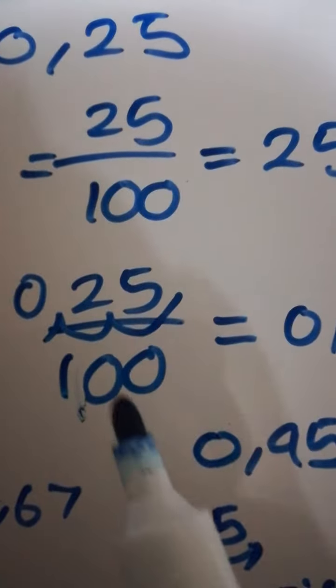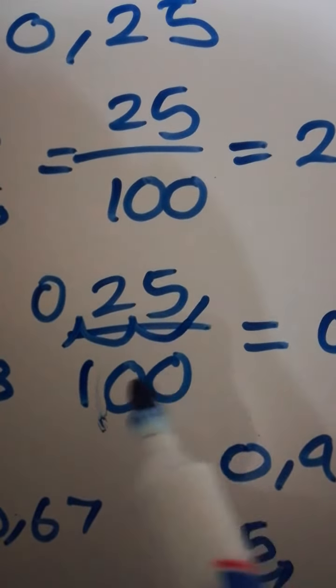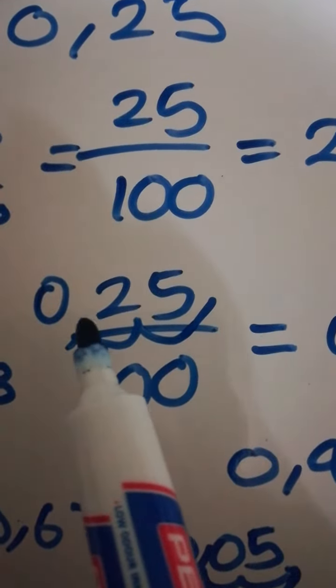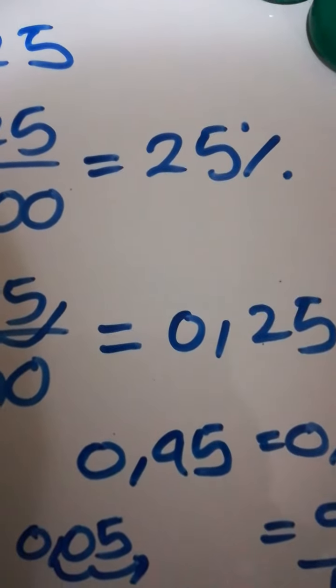If you want to convert it into a decimal, we say 25 over 100. Because we are dividing by 100, which has two zeros, we move two decimal spaces to the left: 1, 2. You put the comma there and a zero will go in front of it. Therefore we get 0.25.